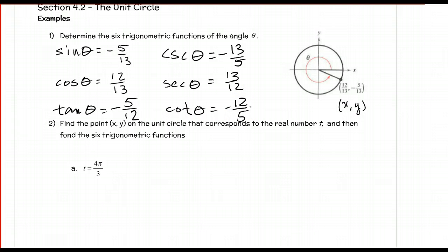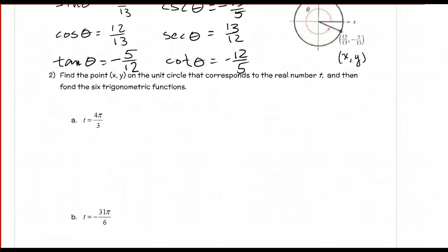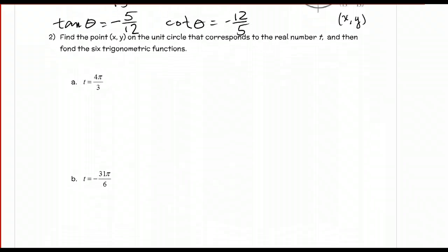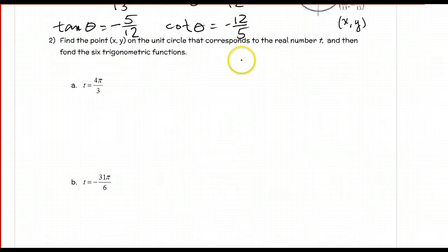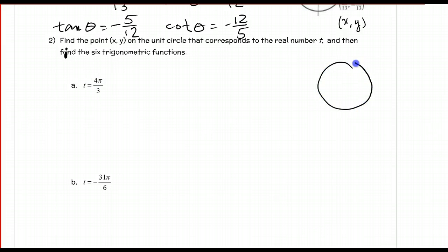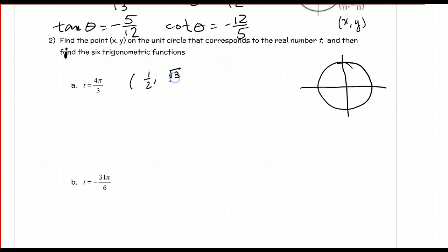Make sure you write down any questions as we go. Pause when you need to. For example 2, we want to find the point (x, y) on the unit circle that corresponds to the real number t, and then find the six trig functions. For t = 4 pi over 3, I know it's a pi over 3 family, and coordinates for any pi over 3 are 1/2 and root 3 over 2. I just need to figure out where 4 pi over 3 is to determine what's positive and negative.